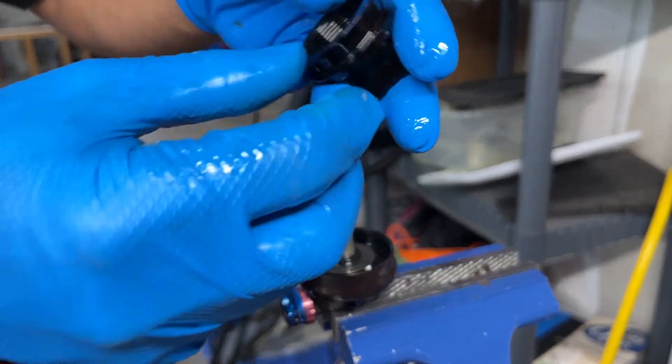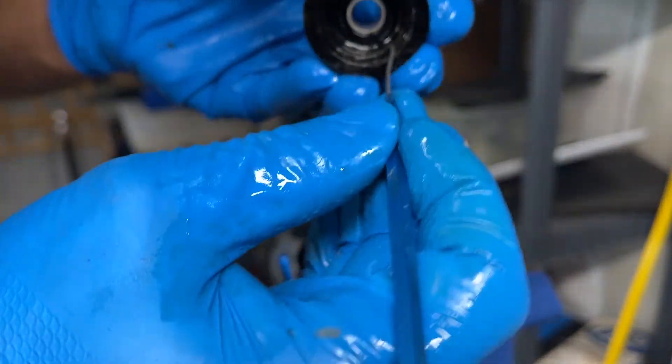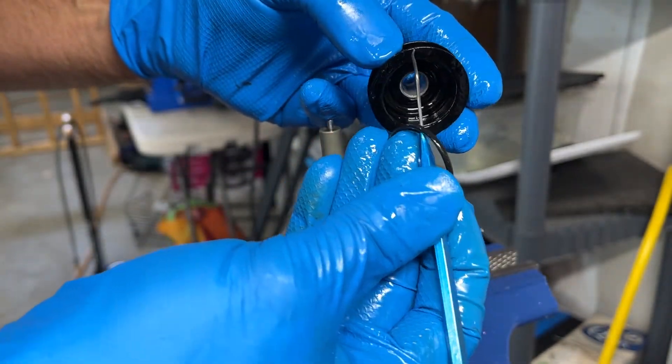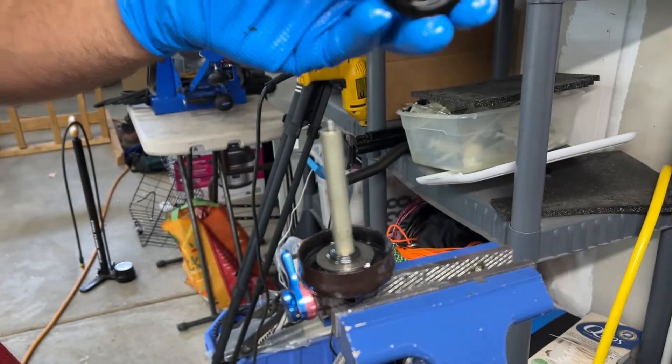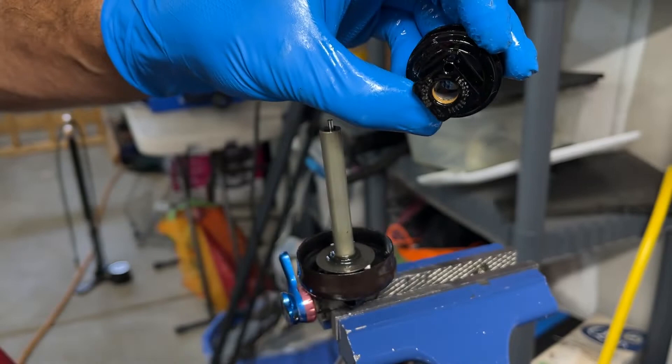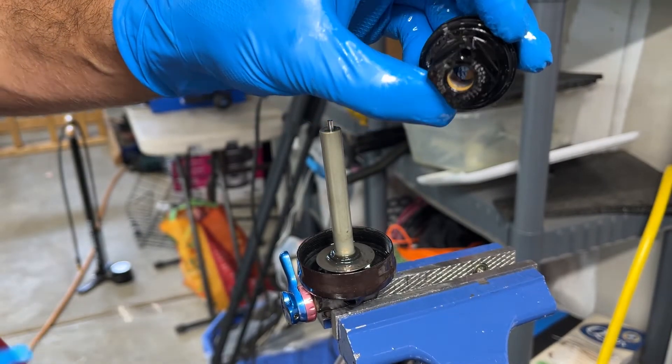Pop this guy off, and there's going to be some seals in here that you end up replacing. See that little seal that comes off. And then there is a urethane seal in here - super hard durometer, that white seal. You're going to replace that with a fresh one.